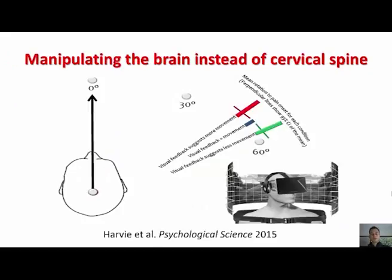This is another fascinating study, by Daniel Harvey, done together with Lorimer Moseley. They put people with chronic neck pain in a virtual reality setup and manipulated the visual input during head rotation movements. There were three conditions: a normal blue condition where visual input matched actual head movement, a red condition where head movement was overestimated, and a green condition.